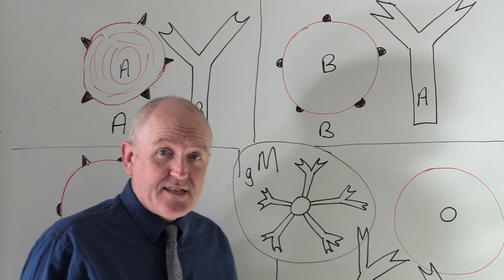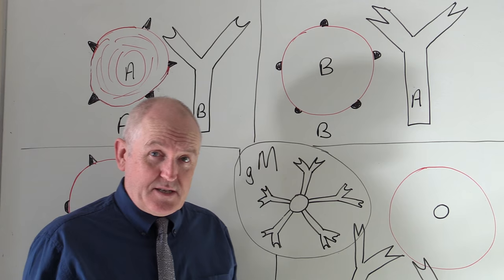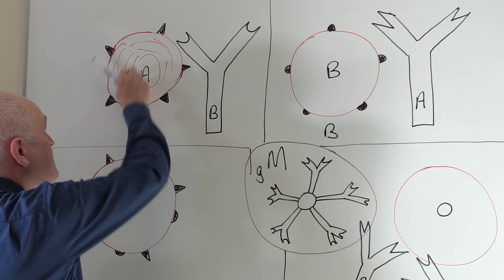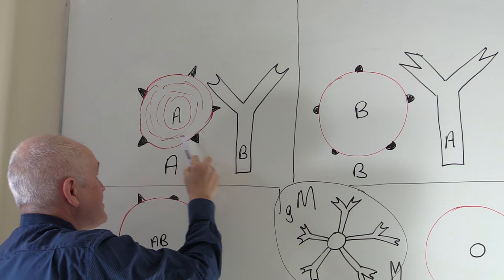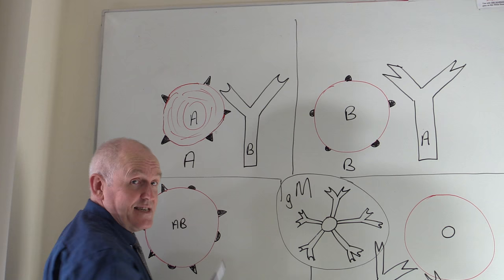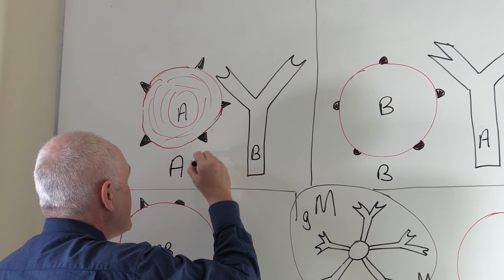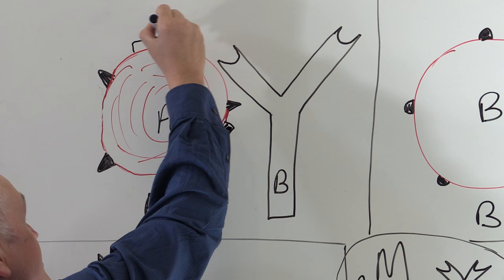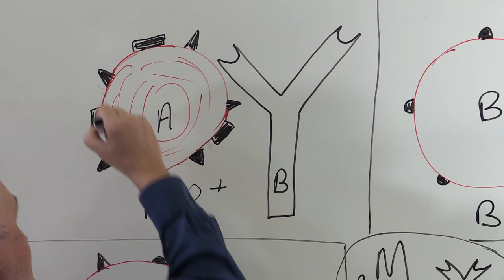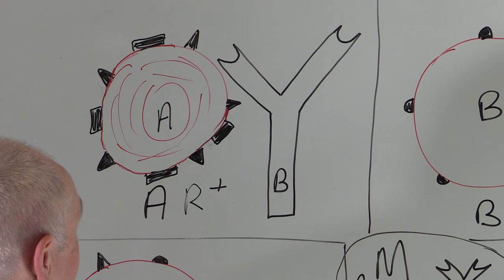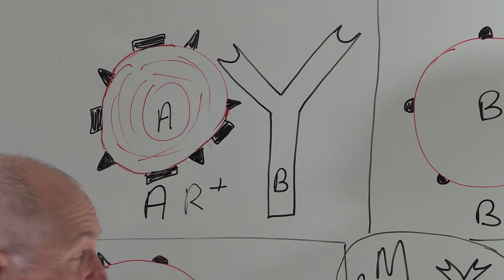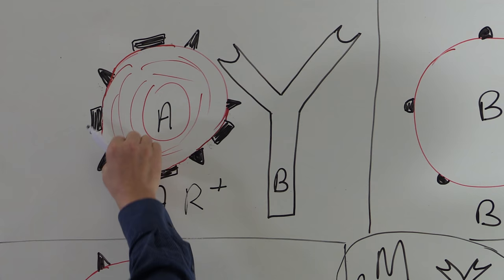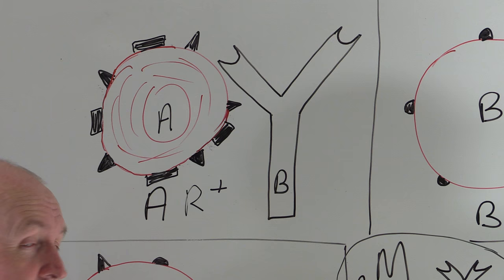The rhesus factor is an additional blood group and is simply present or absent. If someone is blood group A, we can see the A antigens on the surface of the red cell but no other antigens at the moment. If someone is A rhesus positive, they will have rhesus factor antigens on the surface of their cells as well. This antigen is protein-based and genetically determined. We've now diagrammatically added rhesus factor antigens to blood group A, turning them from rhesus negative into rhesus positive.